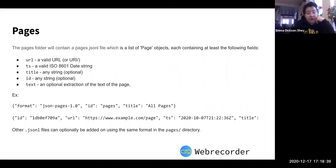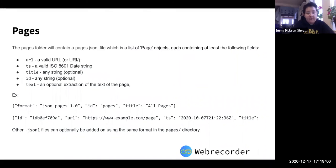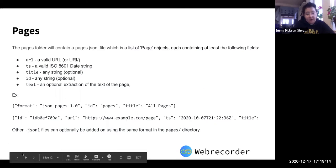The pages folder is slightly different. Originally there was a separate full-text search that would create a separate folder, but we recently combined that functionality into just the pages.jsonl file. If you open up the pages folder you would see a pages.jsonl file, which is a list of page objects in JSON format, with a valid URL, a timestamp, a title, and an optional ID.